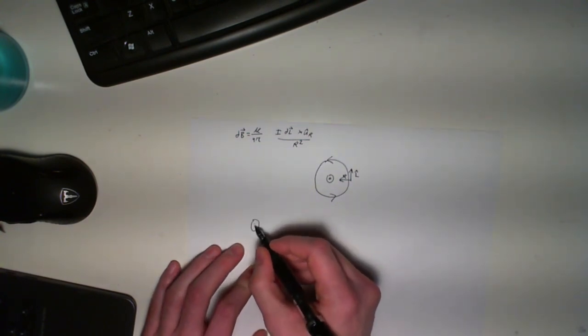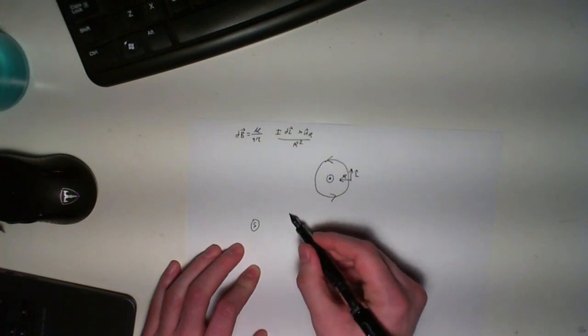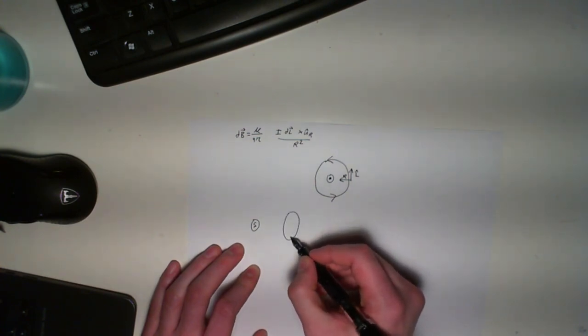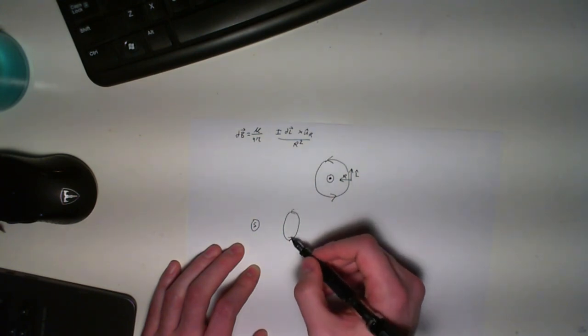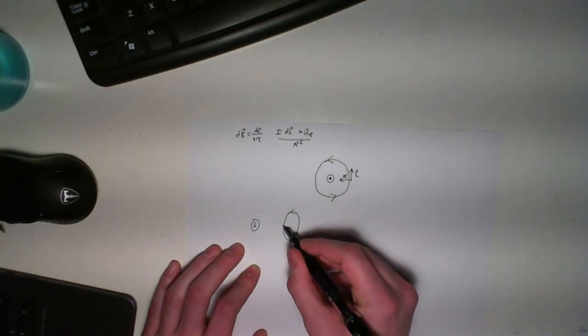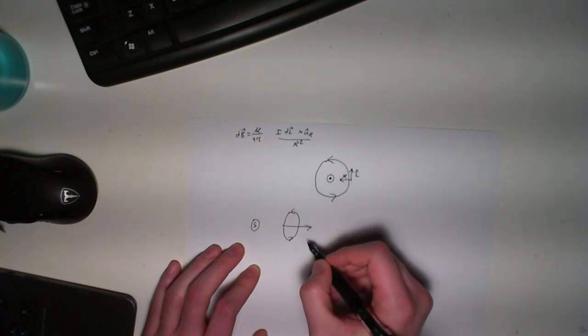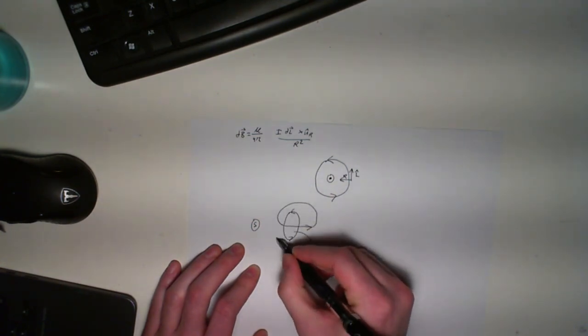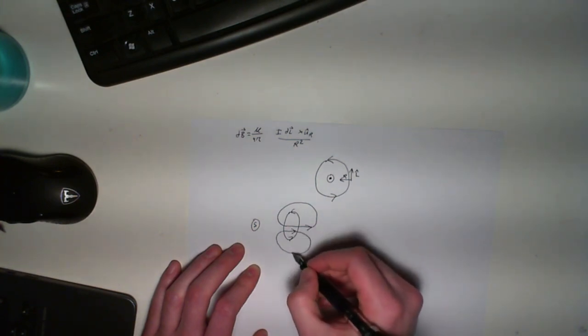we have our permanent magnet with the south pole facing our coil of wire. We know the direction of current in the coil, and thus we know the magnetic field is pointing in this direction. As these are rotational fields, we will draw them as such.